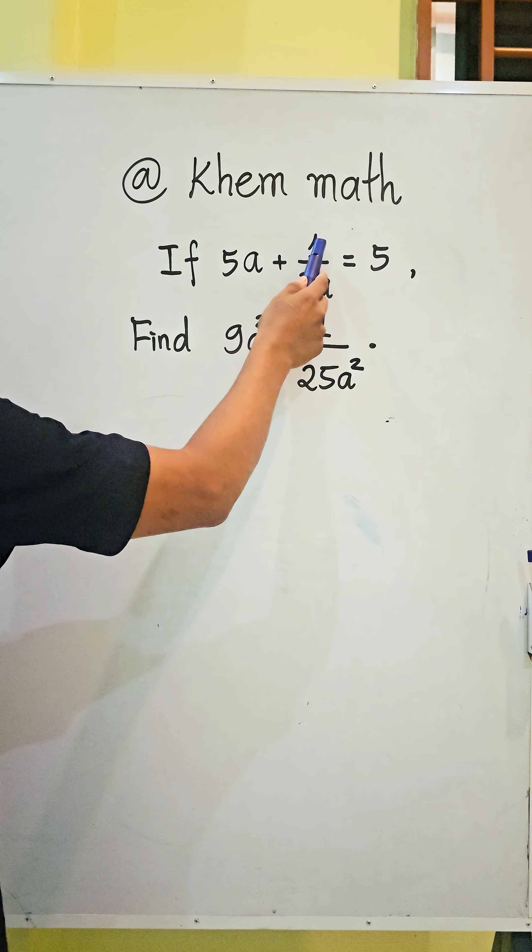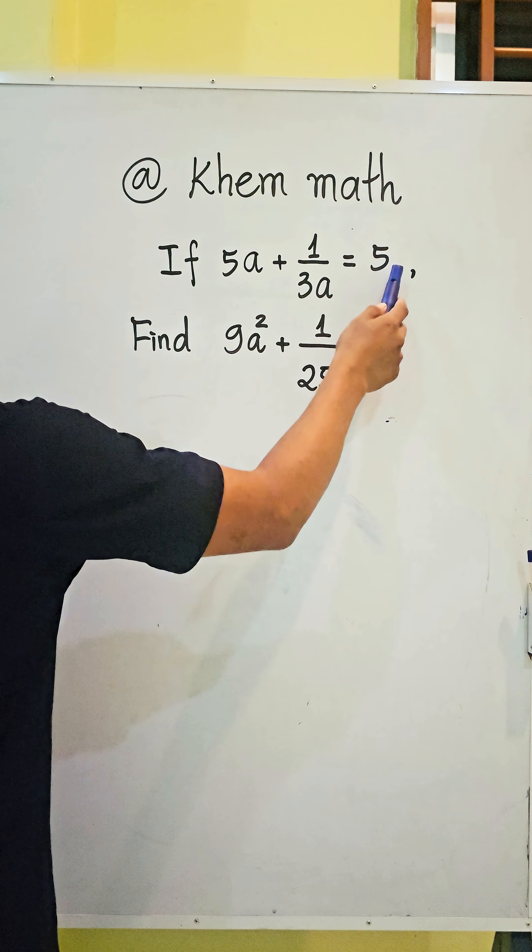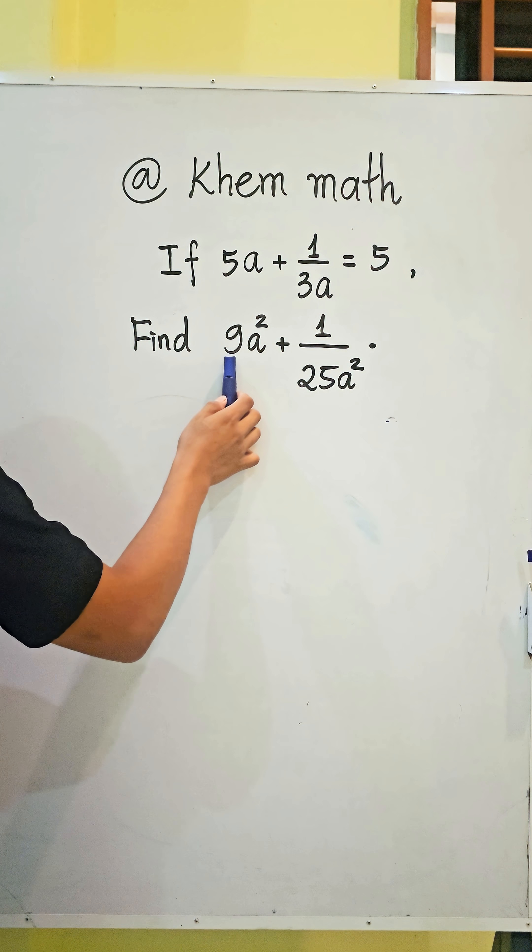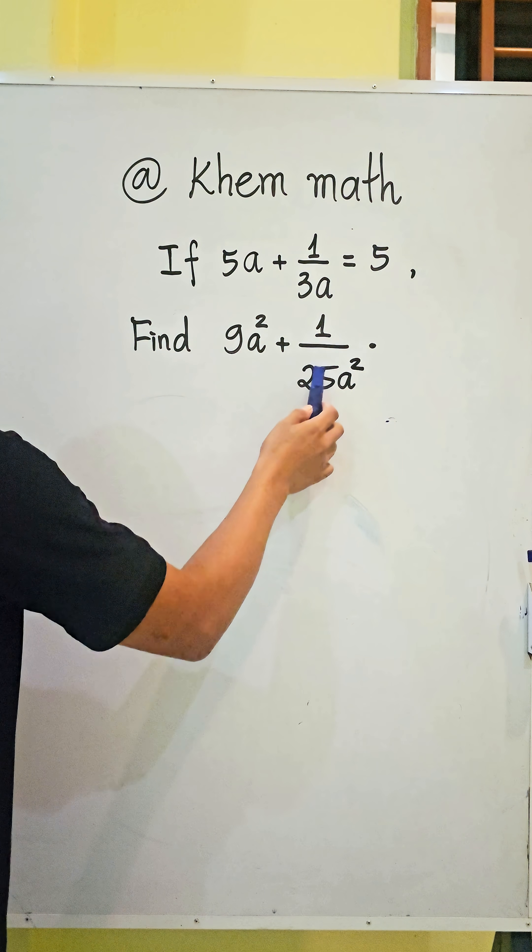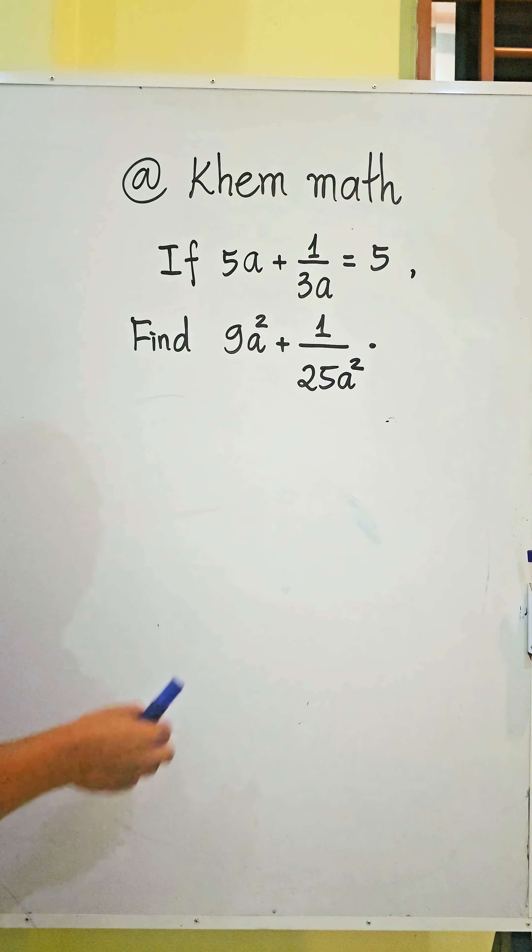If 5a plus 1 divided by 3a equals 5, find 9a squared plus 1 divided by 25a squared. Can you solve this?